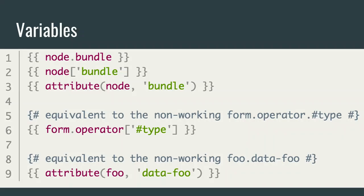In Drupal core, 99% of the time you'll see dot notation being used. When the property starts with a hashtag, you have to use either the square bracket or attribute function notation — the dot notation won't work. Similarly, if the attribute name has a dash inside, you cannot use dot notation because Twig will interpret the dash as a minus sign and try to do a subtraction instead of getting a property of the object. Data attributes are very common especially in a headless world, so when you have something like that, use the attribute function or square bracket notation.